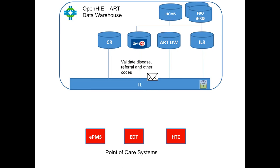The next thing we can do is validate disease codes, referral codes, and other types of terminologies referenced in the clinical message — for example, ICD-10 codes. For this, we'll want to set up a terminology service as a central repository and authority for the clinical codes we're using. With the terminology service, we'll again be able to validate clinical messages coming in, thereby improving data quality.